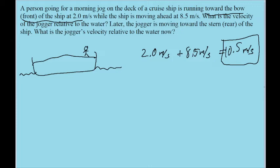For the opposite case, the jogger is moving towards the stern of the ship, which means they're moving in the direction opposite to the direction that the boat is moving in. In this case, you still add them together, except one of them has to be negative, because the two velocities are no longer pointed in the same direction.